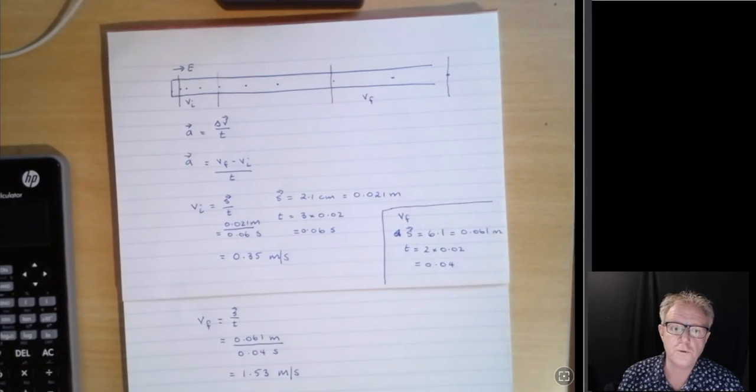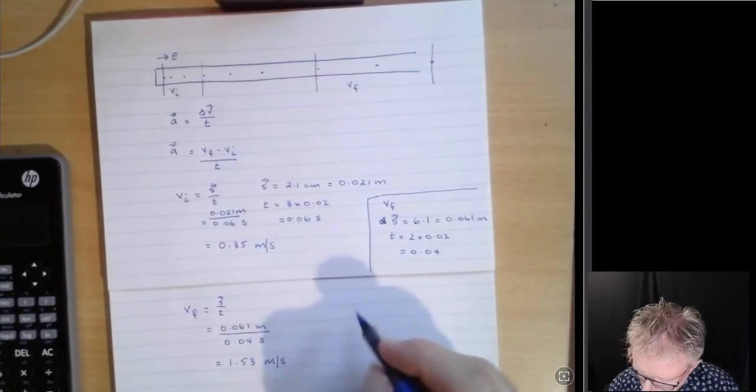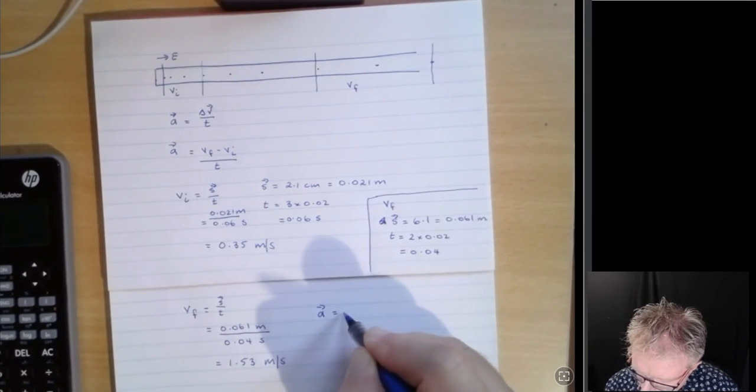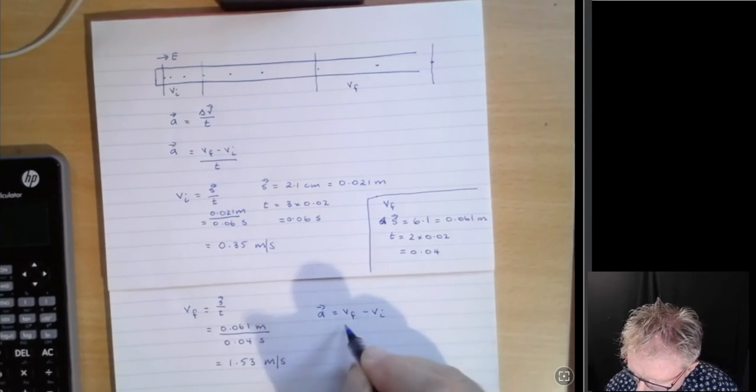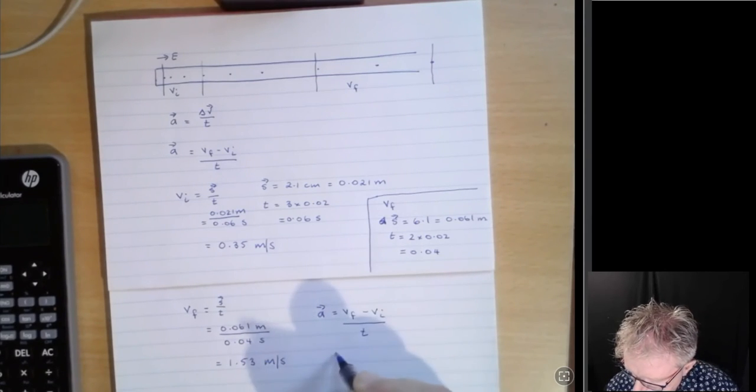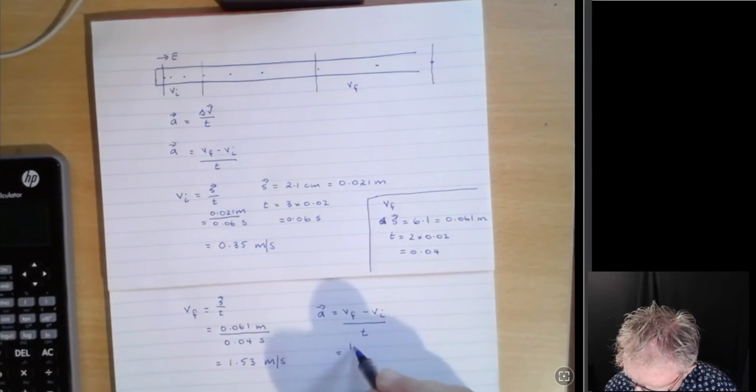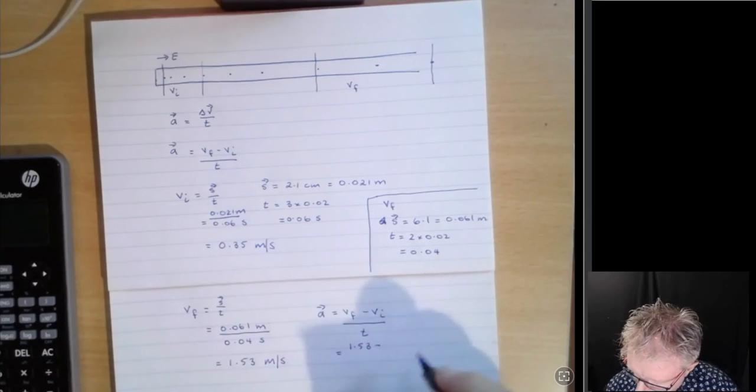So now we have a value for both initial speed and final speed. Now we can go back to our acceleration formula and plug those values in. So let's have a look. Let's write it over here. Acceleration is equal to the final velocity minus the initial velocity divided by time. The final velocity was 1.53. The initial velocity was 0.35.